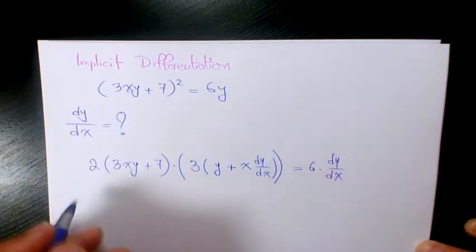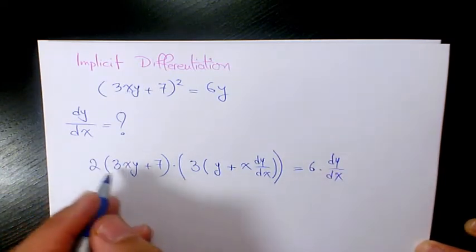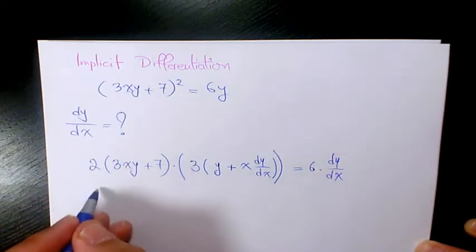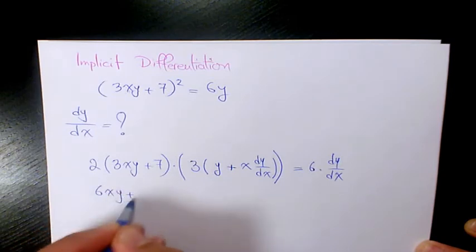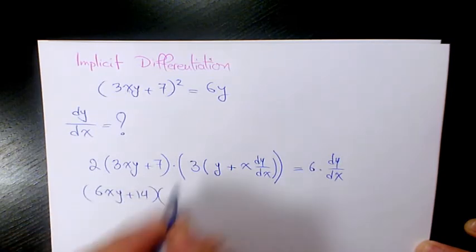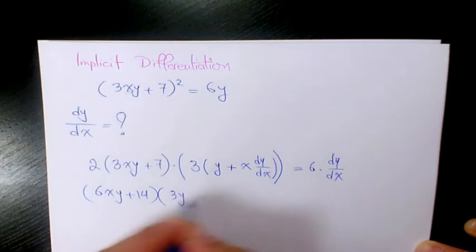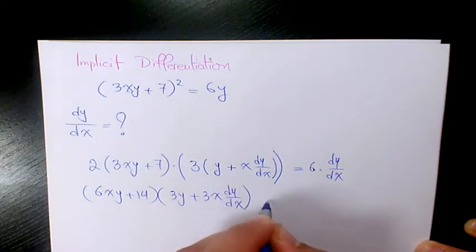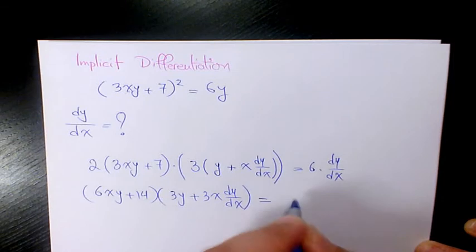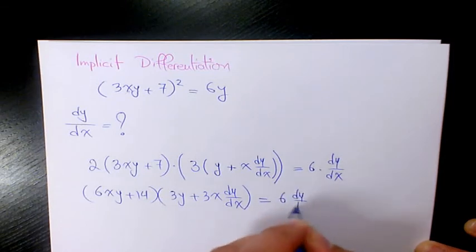So when you simplify it, it's going to be 6xy plus 14 times 3y plus 3x dy equals to 6 dy over dx.